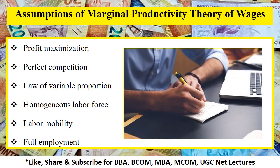Before discussing this theory in detail, let's discuss the assumptions of this theory. The aim of the firm is profit maximization. There is perfect competition in the market and the law of variable proportion is operating. The theory also assumes that all the laborers are homogeneous and there is labor mobility in the market, that is free movement of labor. It also assumes that all the resources are fully employed.